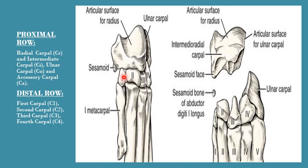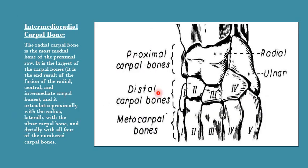In the distal row of carpal bones, at the medial-most aspect of the forelimb, the first carpal bone is present. As we progressively move from medial to lateral, first comes the first carpal, then second carpal, then third carpal, and at the lateral-most aspect the fourth carpal is present. So in the proximal row there are three carpal bones while in the distal row there are four, making seven carpal bones in total.